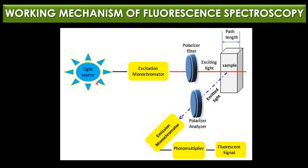In the working mechanism, first, the light source provides the initial light used to excite the sample — usually a specific wavelength produced by a xenon or LED lamp. The excitation monochromator then selects the wavelength of light used to excite the sample, allowing only light of a specific wavelength or range of wavelengths to pass through.